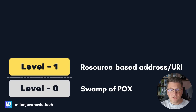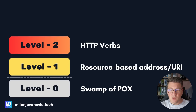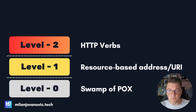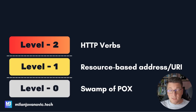This is where level two comes in. At this level, we combine resource-based URIs together with HTTP verbs — GET, POST, PUT, DELETE, and optionally PATCH, which isn't used too often and allows you to update part of a resource instead of the entire resource. Let's see how we can update our API to elevate it to a level two API.